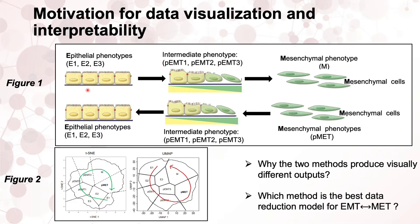However, when applying two different dimensionality reduction methods such as t-SNE and UMAP to reduce the high-dimensional single-cell EMT data, Figure 2 shows different outcomes in terms of the dynamic order of epithelial-mesenchymal transition. That leads us to ask why both methods produce visually different outputs, and which of t-SNE or UMAP is the best data reduction method.